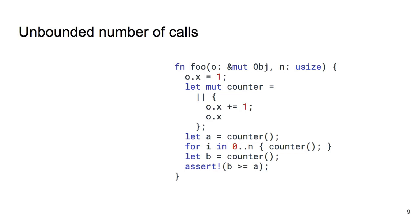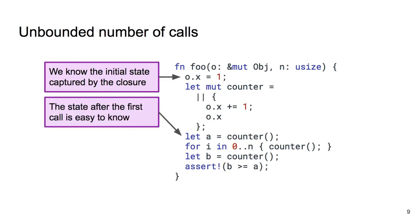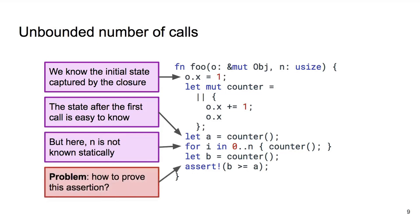So why should this be challenging? Let's recap the problem. We know the initial state captured by the closure. We can also easily figure out the state after the first call. However, the for loop is a complication. We don't know n statically, so we don't know exactly how many times counter was called either. This assertion therefore becomes problematic, as summarizing the effect of a loop with an unbounded number of iterations is difficult for automatic verifiers.